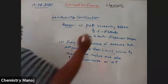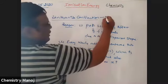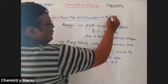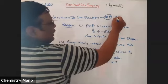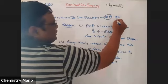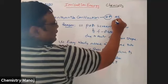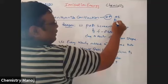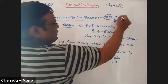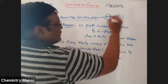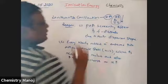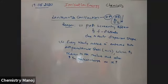So what is lanthanide contraction? As Z value increases, atomic size and ionic size gradually decrease in lanthanide elements. That is called lanthanide contraction.